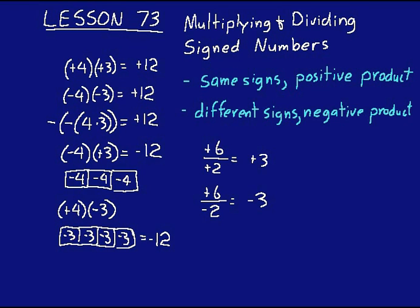Remember, multiplication undoes division. If we had 6 divided by a negative 2 equals a negative 3, we can understand why that is by undoing the division — by doing multiplication of negative 2 times negative 3. The opposite of the opposite of 2 times 3 gives you a 6. So to understand why the division works the way it does with signed numbers, you can do multiplication to undo it, and that will help you.